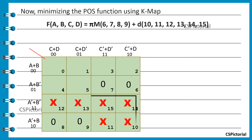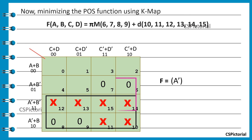Here, we luckily get an octet after involving don't cares. This gives us the term A bar in the final expression. Then we make this quad and get B bar plus C bar.